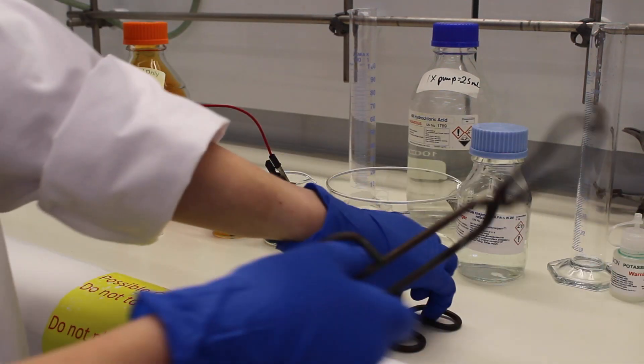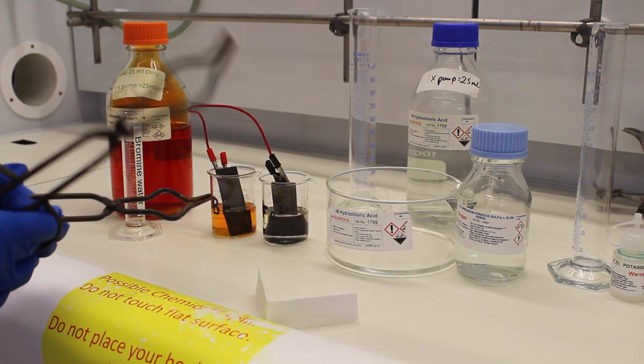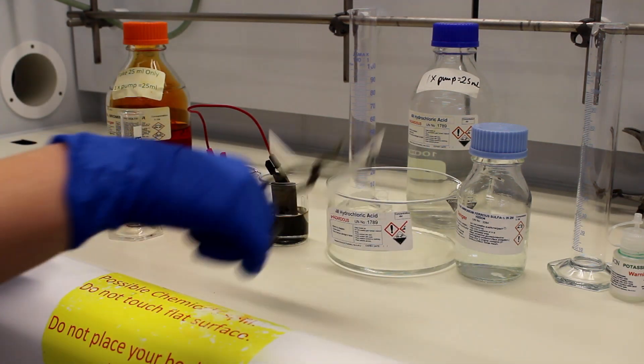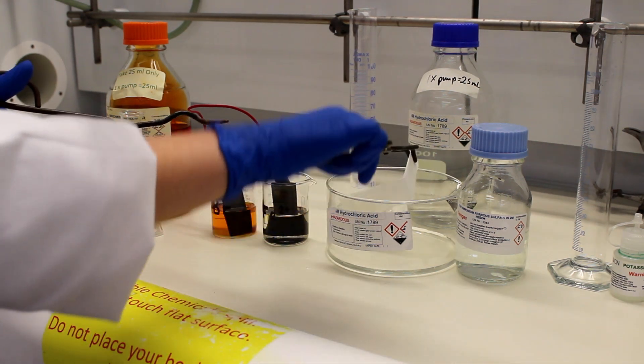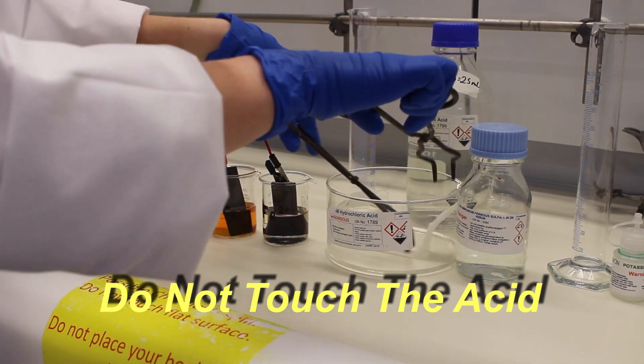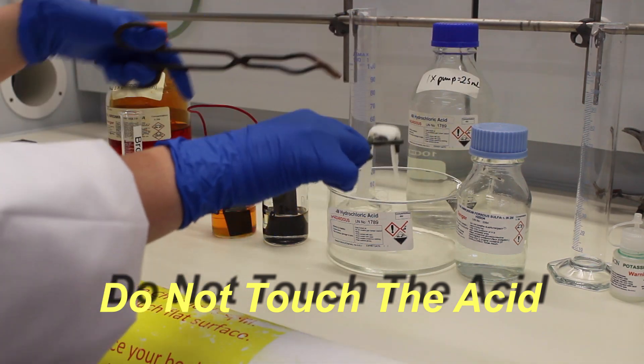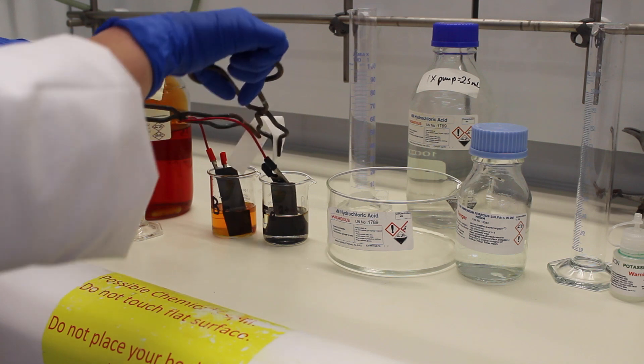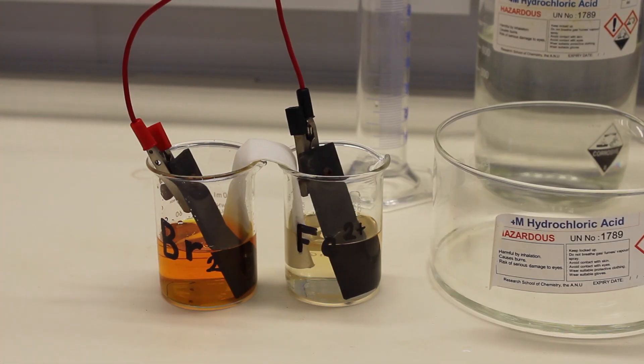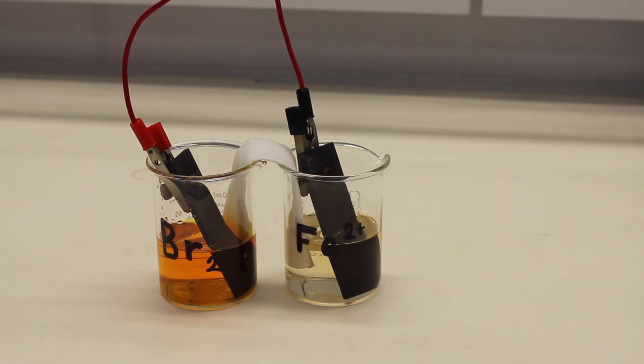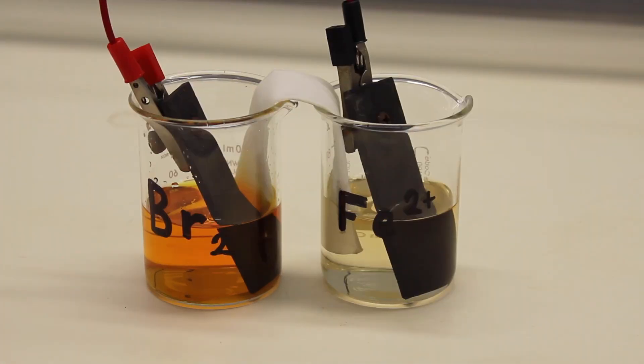Fold your filter paper in half and moisten with 4 molar hydrochloric acid, being very careful not to touch the solution. Once your paper is moistened with the acid, place it between the two beakers and this will act as your ion bridge. We'll leave this setup running and check back on it later.